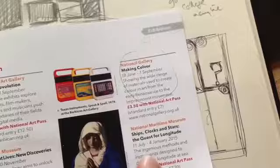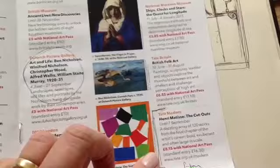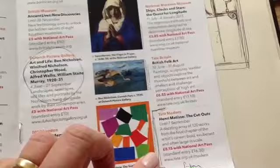National Gallery, that looked interesting: Making Colour, showing how colours are created and used. There's the Henry Matisse at Tate Modern, although I did manage to get to the national screening of that, so it's not like seeing the real thing, but I have had a chance to look at that one.